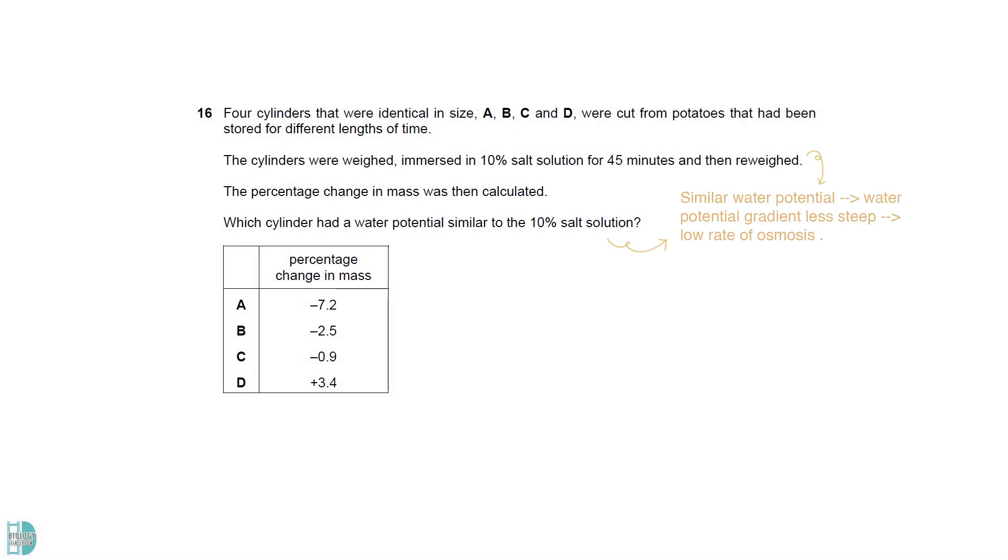When the water potential of the cells is similar to that of the surrounding solution, the rate of osmosis is low due to the small water potential gradient. This causes little net movement and hence a small change in mass.